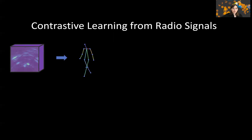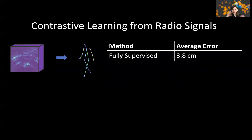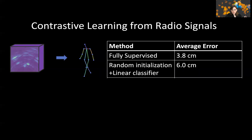We tried contrastive learning on radio signal, exactly on the task of taking radio signal and learning from it a 3D representation of the pose. With a fully supervised neural network, you can achieve an average error of 3.8 centimeters — that is the error in localizing each key point on the body in 3D, like the head, knee, and hip. On the other hand, a fully random representation achieves an error of about 6 centimeters. You would expect contrastive learning to give you something between these two.